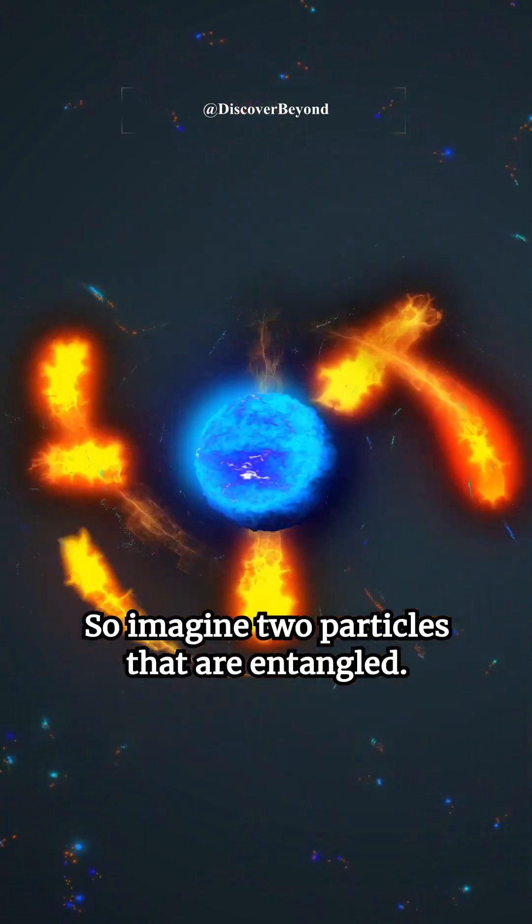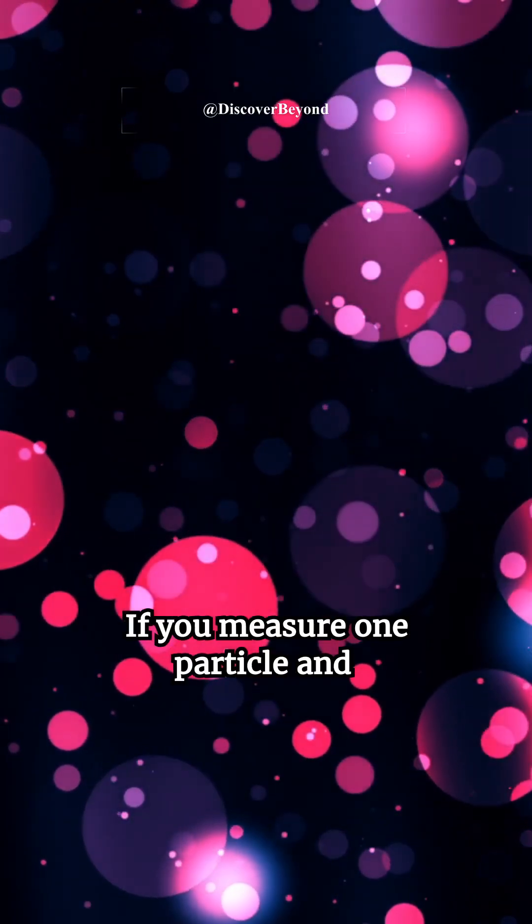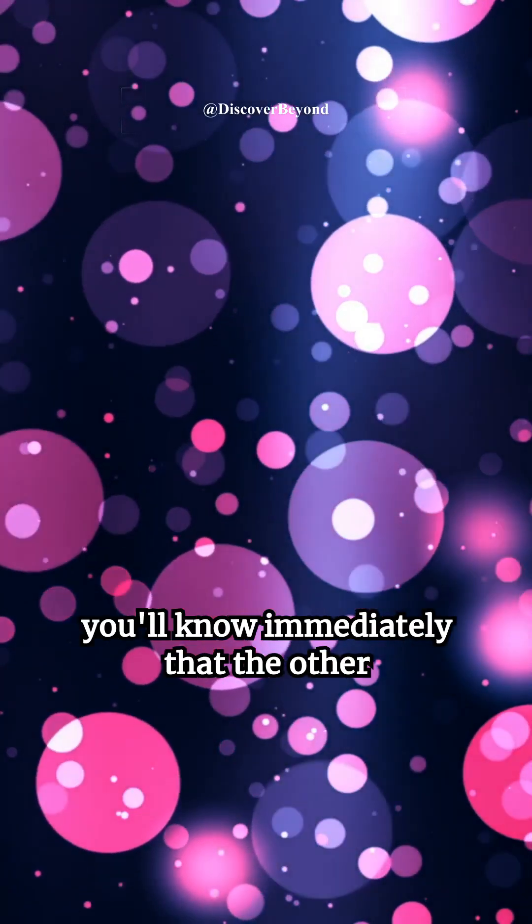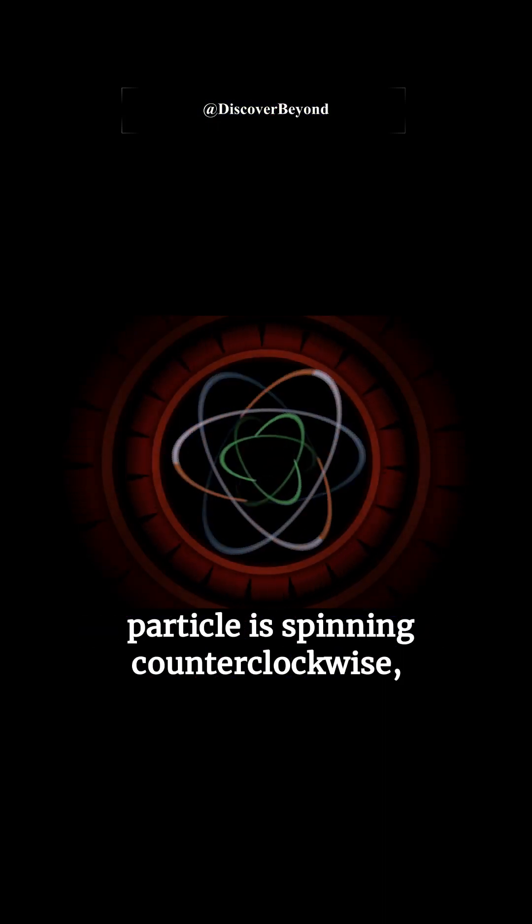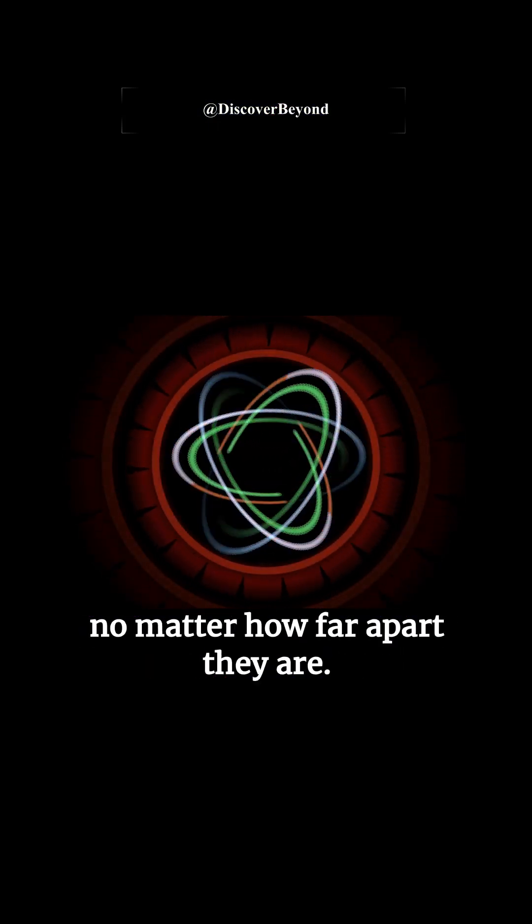So, imagine two particles that are entangled. If you measure one particle and find it to be spinning clockwise, you'll know immediately that the other particle is spinning counterclockwise, no matter how far apart they are.